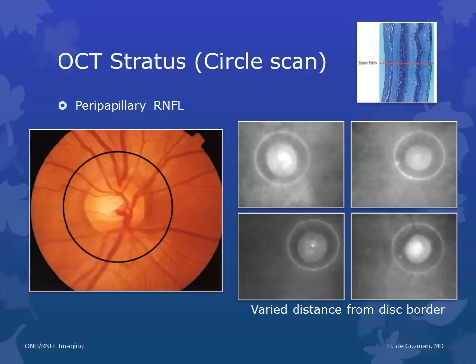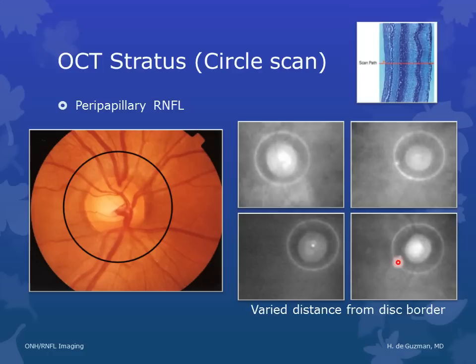The circle scan also begins with the technician centering the scan over the optic nerve head. The machine performs 256 or 512 individual A scans in a circular pattern around the optic nerve head. The distance of the scan from the disc border will vary depending on the size of the disc. When it's a small disc, the RNFL being measured is further out, as opposed to a large disc, where the RNFL being measured is closer to the disc. This is one source of artifact for the circle scan of the Stratus OCT.